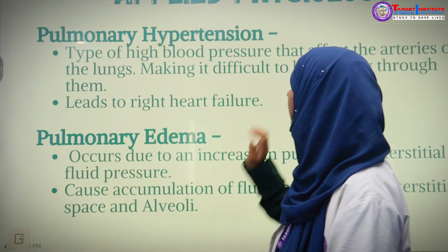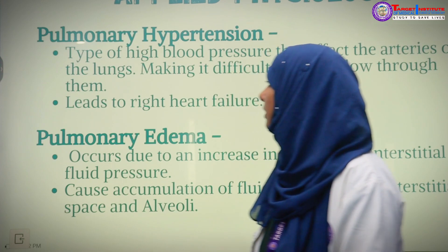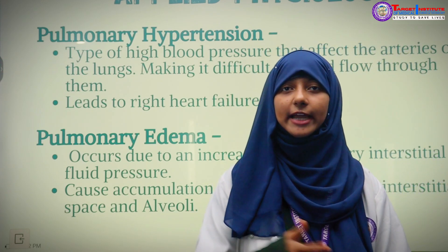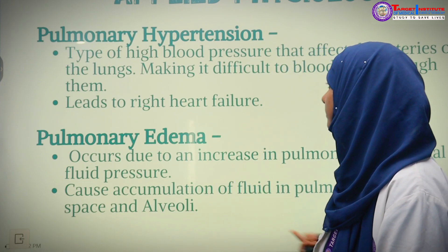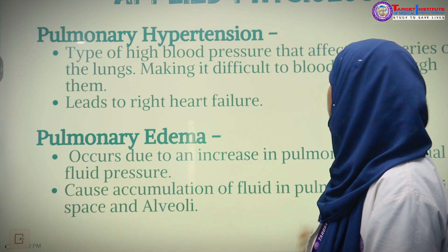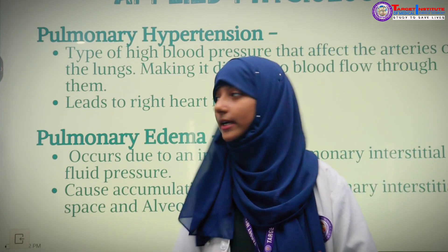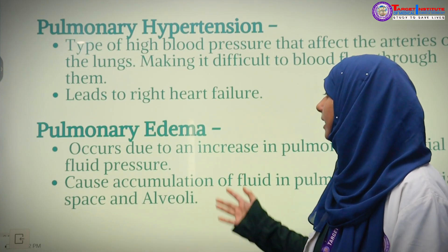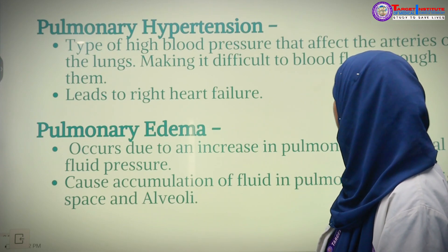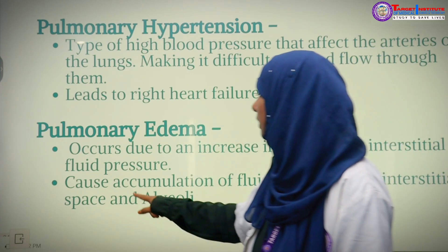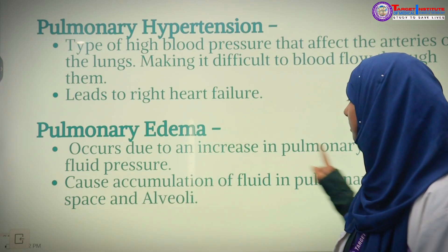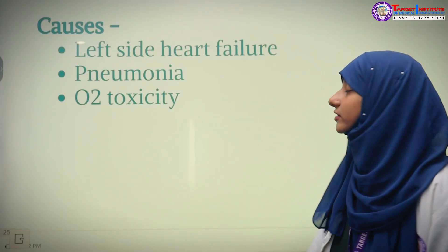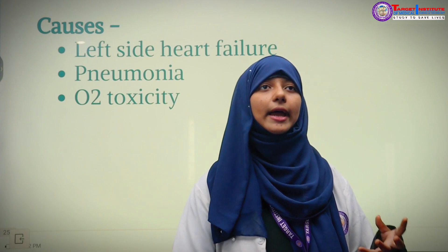In applied physiology: pulmonary hypertension means high blood pressure that affects the arteries of the lungs, making it difficult for blood to flow and leading to right heart failure. Pulmonary edema occurs due to an increase in pulmonary interstitial fluid pressure, causing accumulation of fluid in the pulmonary interstitial space and alveoli, and can cause left side heart failure, pneumonia, and oxygen toxicity.